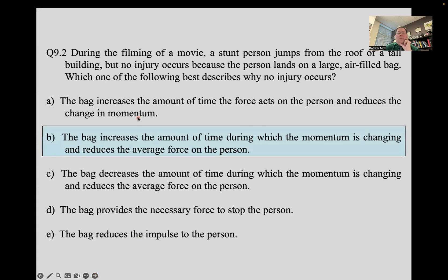All right. So no injury occurs because the bag increases the amount of time during which the momentum is changing, and that reduces the average force on the person. So the change of momentum does not reduce. You're coming to rest. So you have your momentum right before you hit the bag. Your final momentum is zero. That's set in stone. Nothing you can do about that. What you can do is you can cause that change of momentum to stop with a long time interaction and a small force or a short time of interaction and large force or anything in between. The bag decreases the amount of time? No, that would be the wrong direction. The bag provides the necessary force to stop the person, but that's true. But so would a block of cement, that would also provide the force. And the bag reduces the impulse to the person? No, the impulse is the change in momentum. You can't change that. You can change what force corresponds to that impulse.